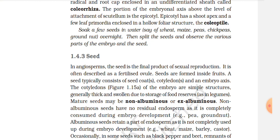Soak a few seeds in water — maize, peas, chickpeas, groundnut — overnight; then split the seed and observe the various parts of the embryo and the seed. 1.4.3 Seed in Angiosperms. The seed is the final product of sexual reproduction. It is often described as a fertilized ovule. Where seeds are formed inside fruits, a seed typically consists of a seed coat, cotyledons, and an embryo.